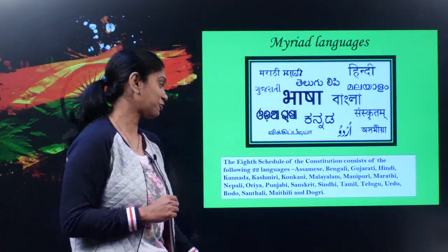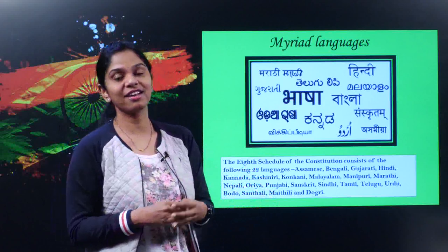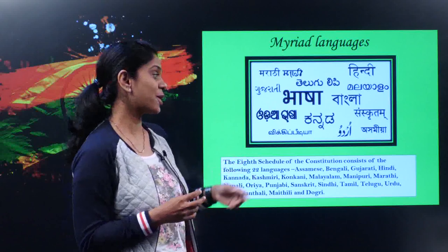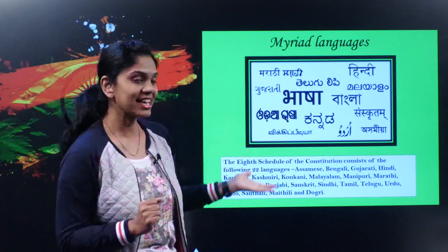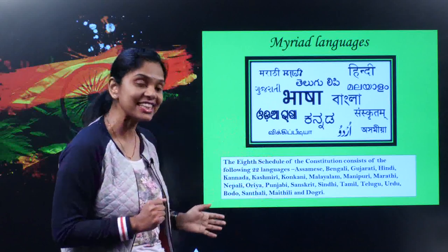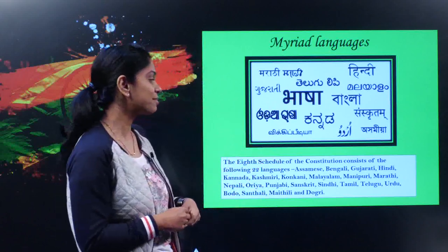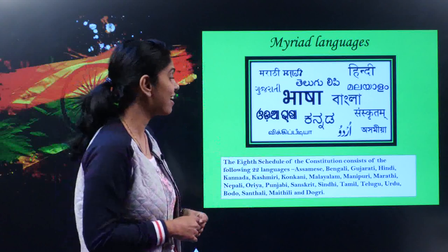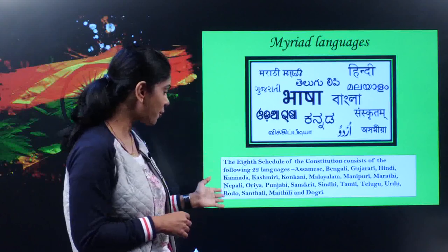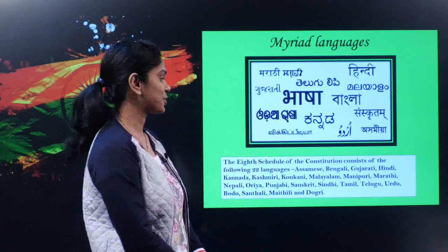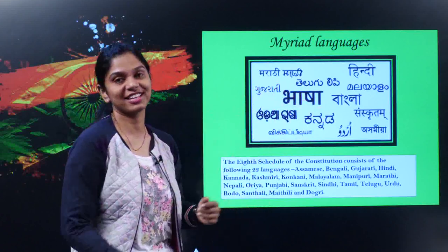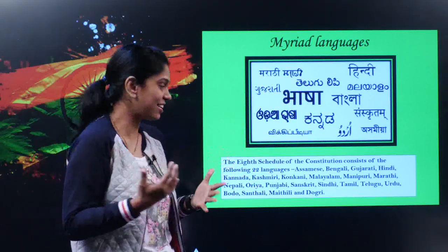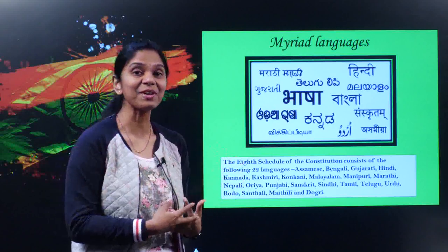Myriad languages. Officially we have 22 languages, but there are hundreds and thousands of dialects all over India. According to our constitution, the 22 official languages are Assamese, Bengali, Gujarati, Hindi, Kannada, Kashmiri, Konkani, Malayalam, Manipuri, Marathi, Nepali, Oriya, Punjabi, Sanskrit, Sindhi, Tamil, Telugu, Urdu, Bodo, Santali, Maithali and Dogri. But every town, every village has a different dialect of the same language — and yet we are all united.